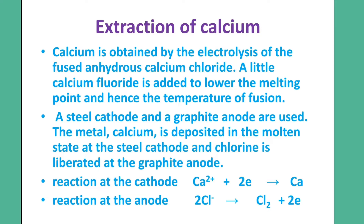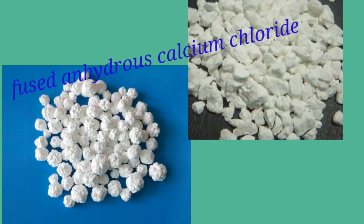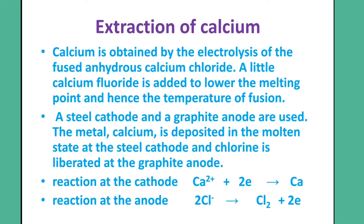The next example is extraction of calcium. Calcium is obtained by the electrolysis of the fused anhydrous calcium chloride. Fused anhydrous calcium chloride is added to lower the melting point and enhance the temperature of fusion. The amount of calcium chloride is added to lower the melting point and also to the boiling point.